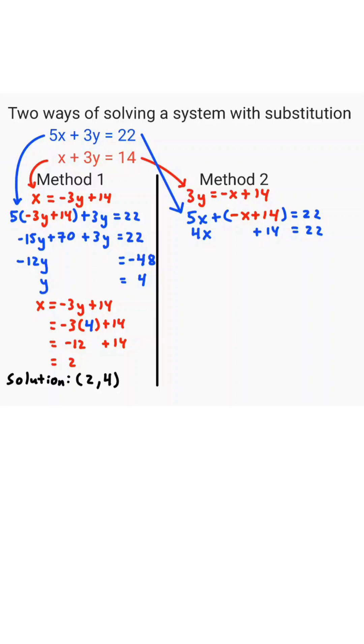We'll combine like terms to get 4x plus 14 equals 22. Subtract 14 both sides to get 4x equals 8. Divide both sides by 4 to get x equals 2.